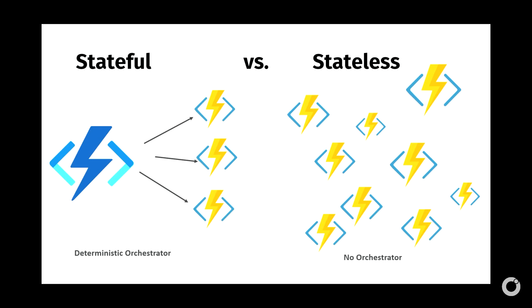Stateful versus stateless in the world of Durable Functions: on the left you see the orchestrator keeps things stateful — you have control over it. On the right, stateless means there's no orchestrator — each individual Azure Function can lose its state, especially if the virtual machine provisioning it gets restarted. That's the key difference.